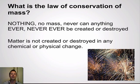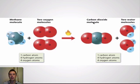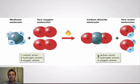Matter cannot be created or destroyed during any chemical or physical change. Here's a combustion reaction as an example: methane reacts with oxygen and fire. There is one carbon, four hydrogen, and four oxygen molecules. When that combustion reaction occurs, everything rearranges and we get carbon dioxide and water as our products. You'll notice one carbon, four hydrogen, four oxygen — the amounts are conserved. This holds true to the law of conservation of mass: the amount of carbon, hydrogen, and oxygen does not change. This law holds true in all physical and chemical changes.